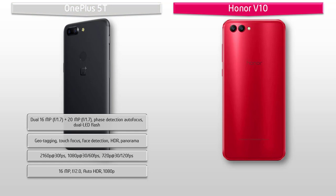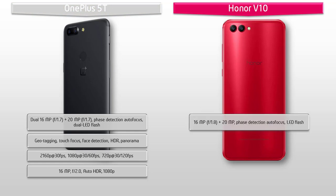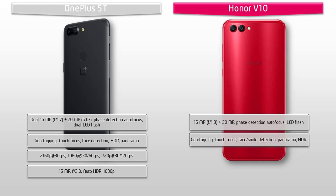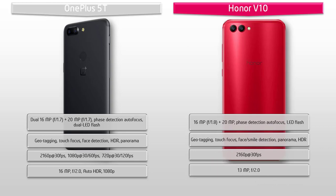Moving on to the primary camera of the Honor V10, it consists of a 16 megapixels color and 20 megapixels monochrome sensor pairing dual cameras with f/1.8 aperture. Unfortunately there is no optical image stabilization, but it does have real-time scene and object recognition with phase detection autofocus and LED flash. You can also find geotagging, touch focus, face and smile detection, panorama, and HDR. Huawei gives flexibility to shoot videos at 2160p at 30 fps as well. The Honor V10 also comes with a secondary camera of 13 megapixels with f/2.0 aperture for selfie shootouts.